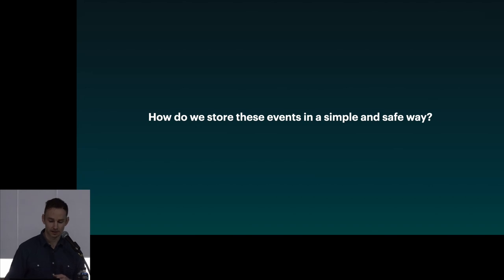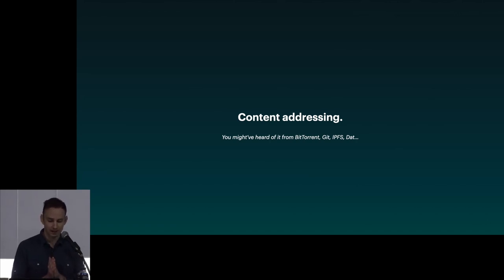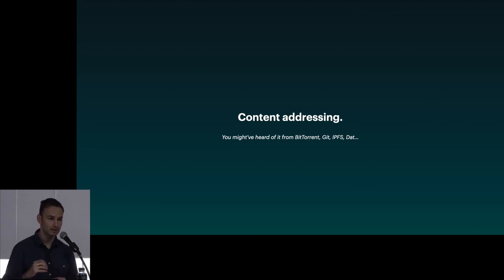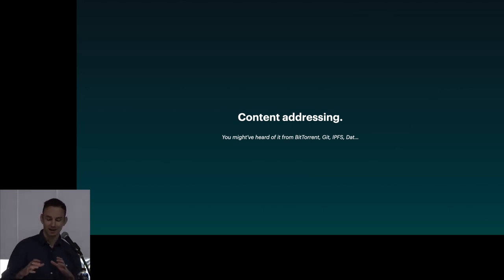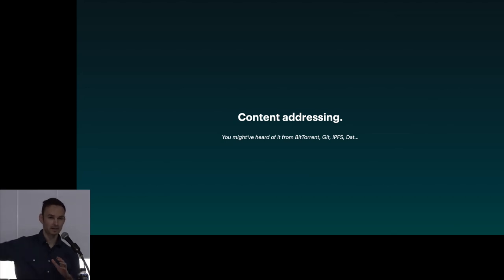Now, how do we store these events in a simple and safe way? We're going to use content addressing. Content addressing is used in lots of places — BitTorrent, Git, IPFS. The basic idea is that if you want to reference some piece of content, you take that content, put it through a hash function, and get your hash. It's a one-way function: you can't go from the hash to the data, but you can get from the data to the hash. Then we create a mapping back — you memorize the hash, remembering that this hash referred to that data. We'll use a key-value store to map hashes to data.